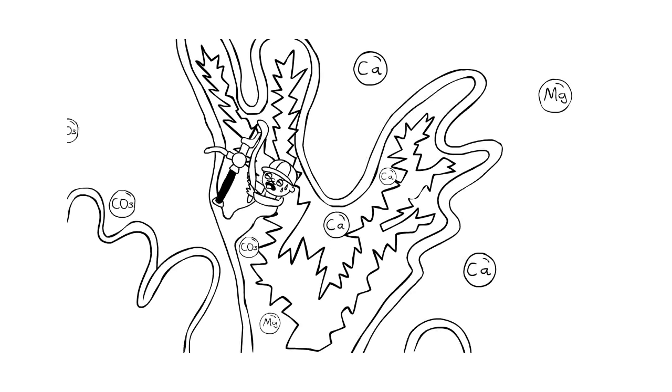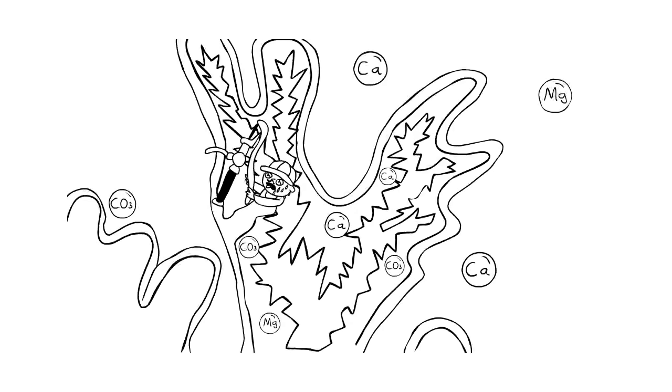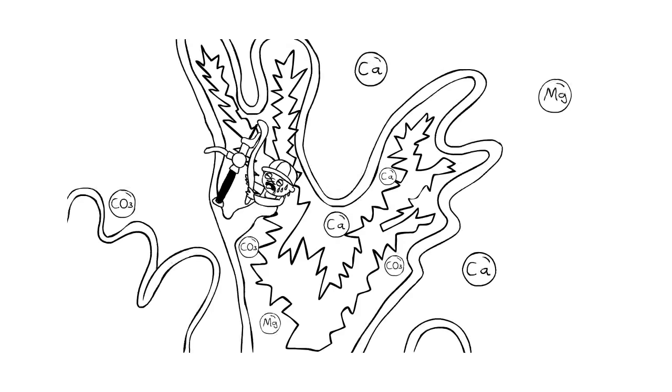Which means there must be a much higher ionic strength internally than in the aquarium water. But growth uses up the elements, so new elements need to be brought through the membrane in order to maintain the necessary conditions. This requires a lot of energy.